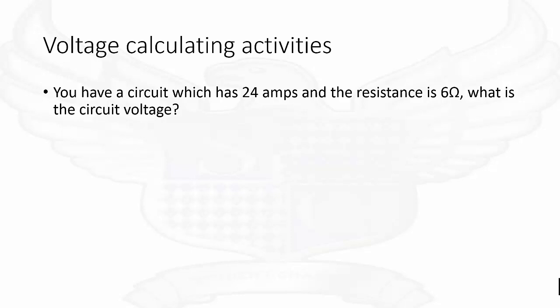Our second question. You have a circuit which has 24 amps and the resistance is 6 ohms. What is the circuit voltage? Look back at your triangle. 24 multiplied by 6, which gives us 144 volts.